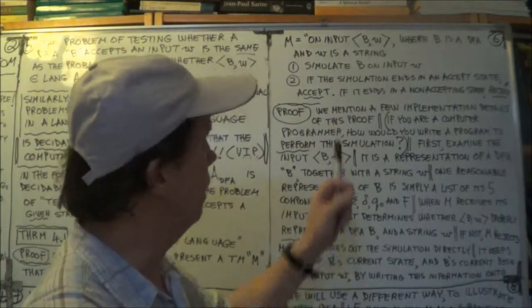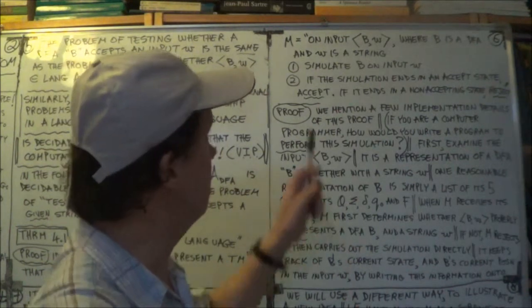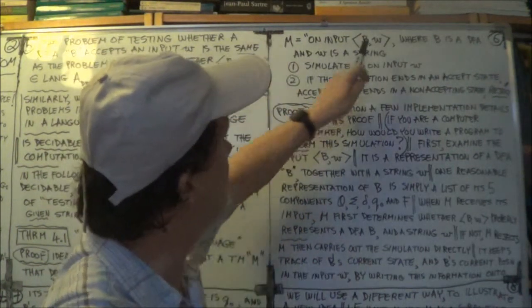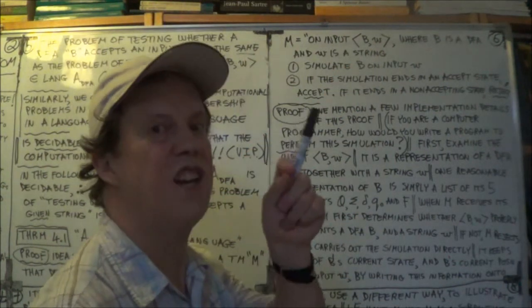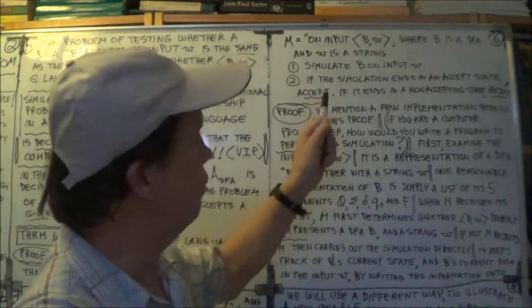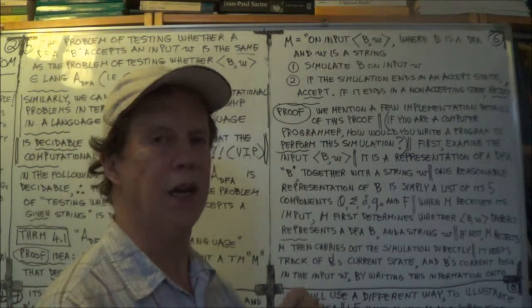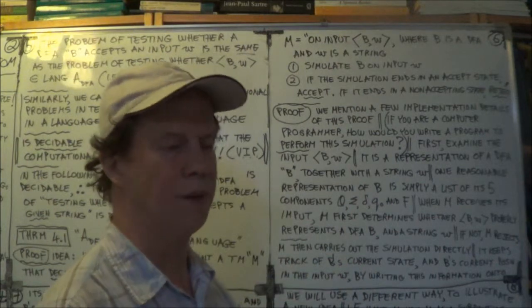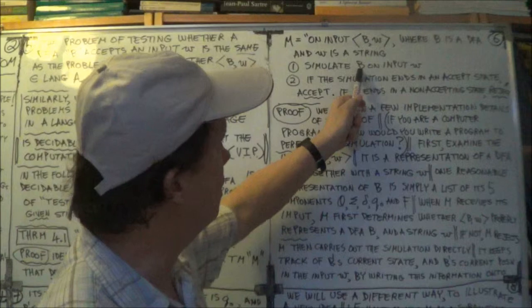What this Turing machine is doing is simulating. The Turing machine M is going to simulate this machine B, okay? That's the key idea of the proof. Usually any proof, there's usually at least one key idea that the whole proof is based on, and this is it.